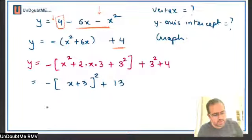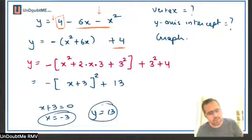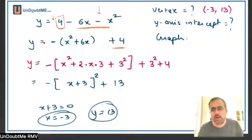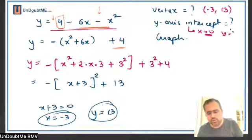It will be minus of x plus 3 whole square, and this will give 9 plus 4 equals 13. From here we do the same thing: put x plus 3 equals 0, so x equals minus 3. If I put it back, I get y equals 13. So the vertex is minus 3 comma 13.